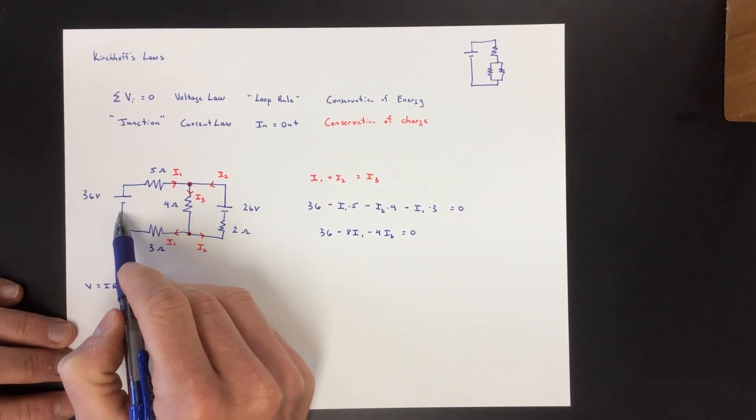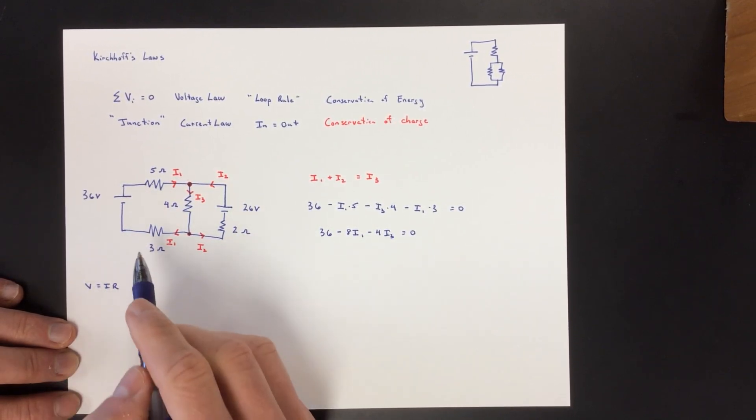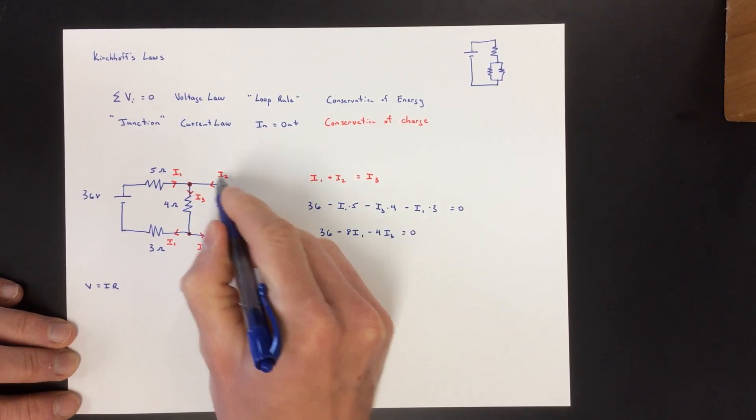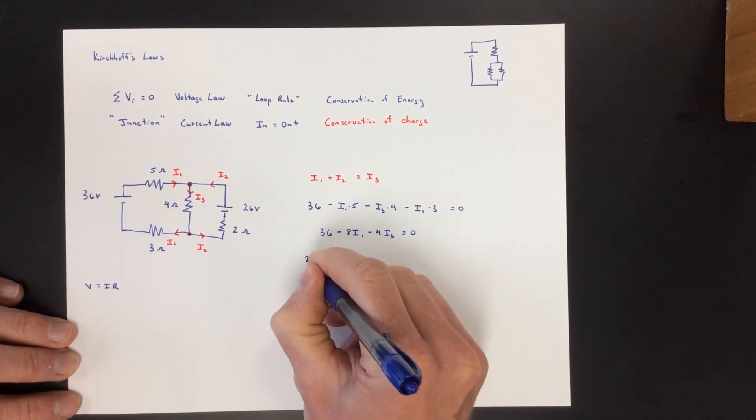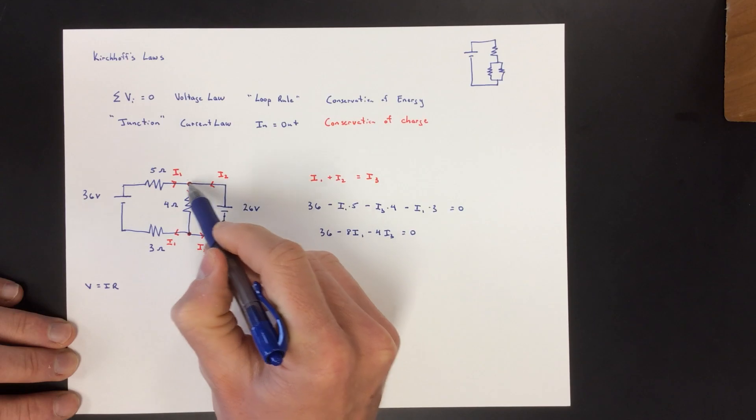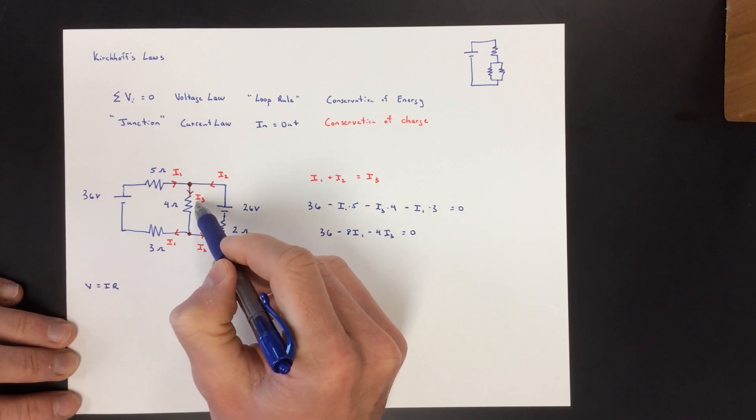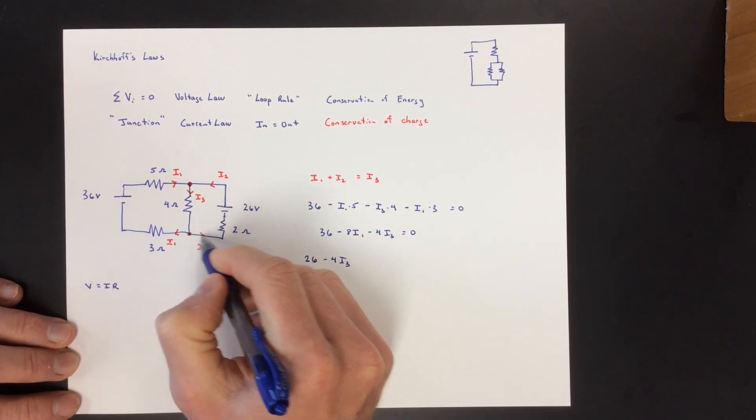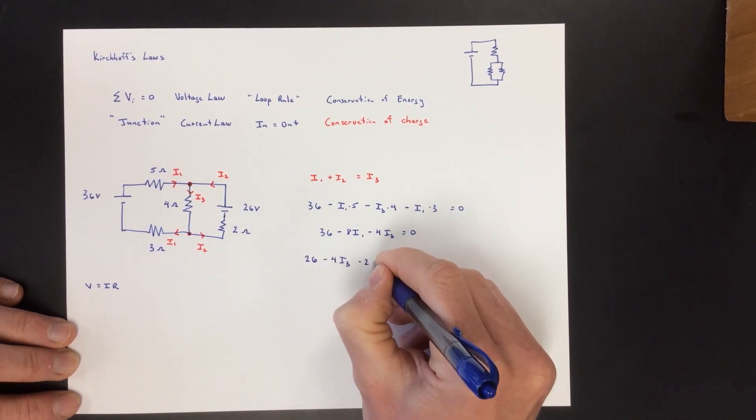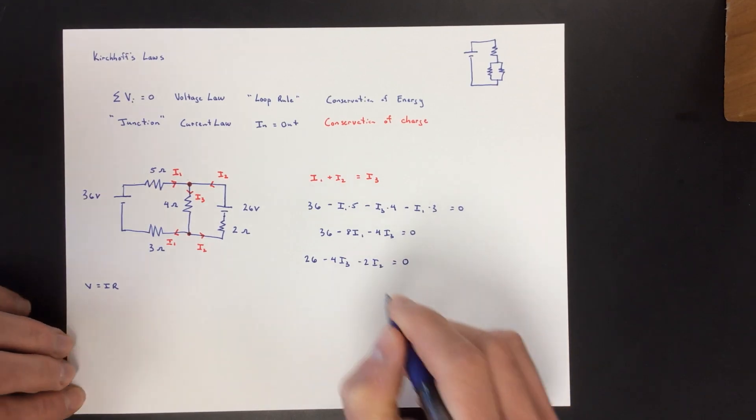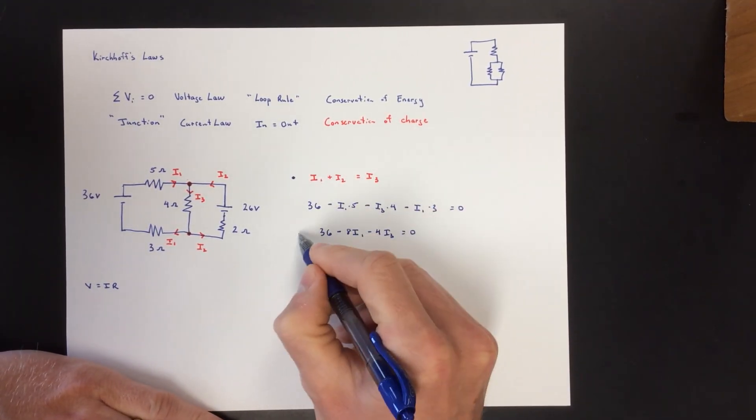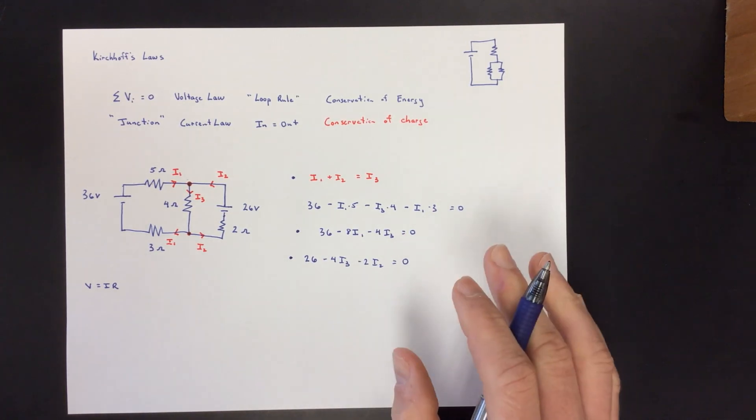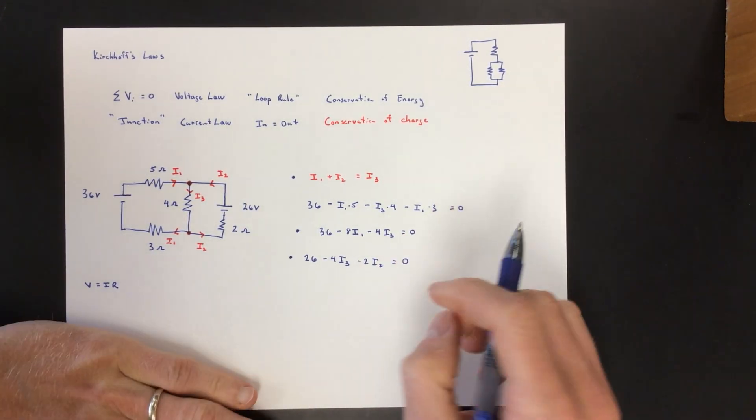So you can either do the big loop or you could do this loop. I'm going to do the small loop. So I'm going to start here, and I need to do a complete loop. I'm going to gain 26 from this battery. Gain 26, and then I'm going to lose current times resistance, so I'm going to get 4I3, and then I'm going to lose 2I2, and that equals 0. What you have here is you have three equations and you have three variables. So at this point, it stops being physics and it just becomes math. It's three equations and three variables, and you have to solve a system.